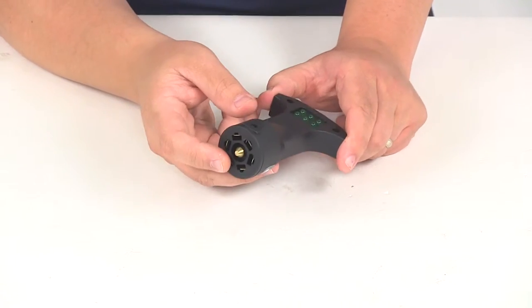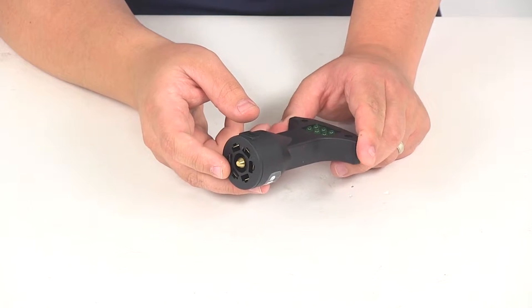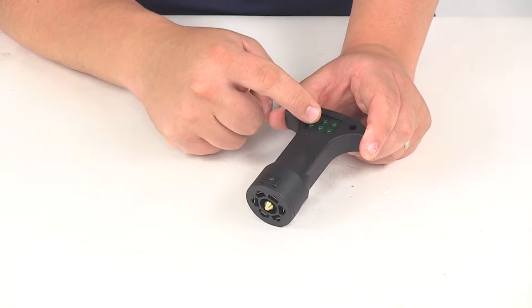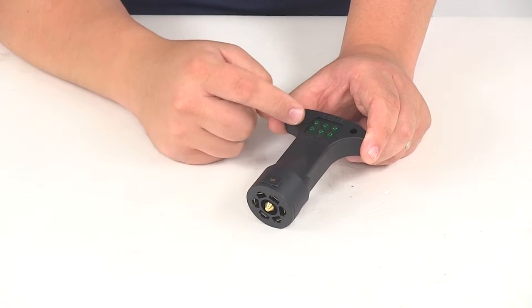All you have to do is plug the tester into a 7-way connector, and the LED lights will indicate which functions are working properly.